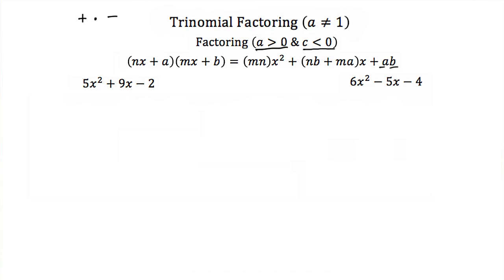Now again, our a is positive, so we're only going to use the positive factors of our leading coefficient. So if we have 5x squared plus 9x minus 2, I'm only going to consider the positive factors of 5 — in this case, 1 and 5. Now my factors of negative 2 are either negative 1 and 2, or 1 and negative 2. I have to consider them both because I don't know which one is supposed to be positive or negative.